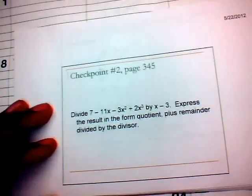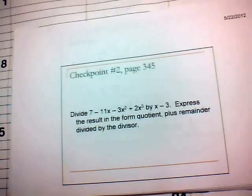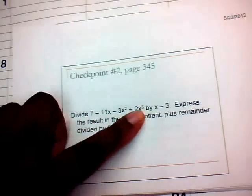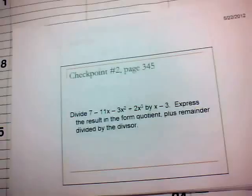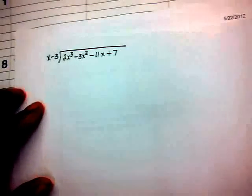Now let's divide 7 minus 11x minus 3x squared plus 2x cubed by x minus 3, and express the result as a quotient plus the remainder divided by the divisor. We rewrite the dividend in descending powers: 2x cubed minus 3x squared minus 11x plus 7.